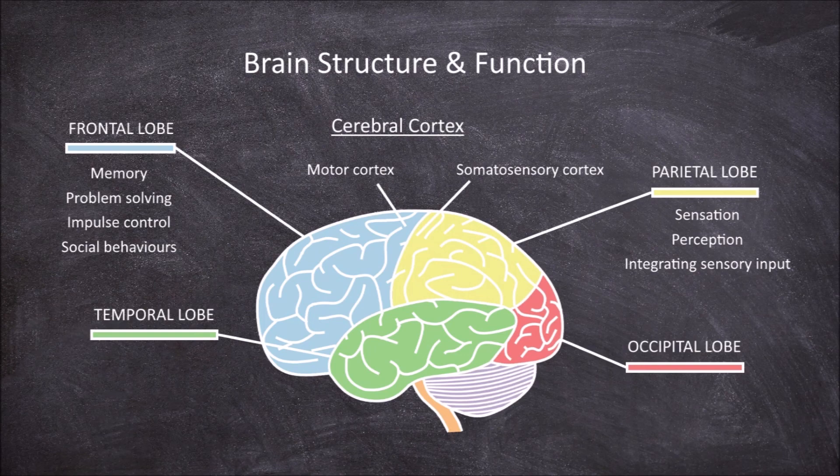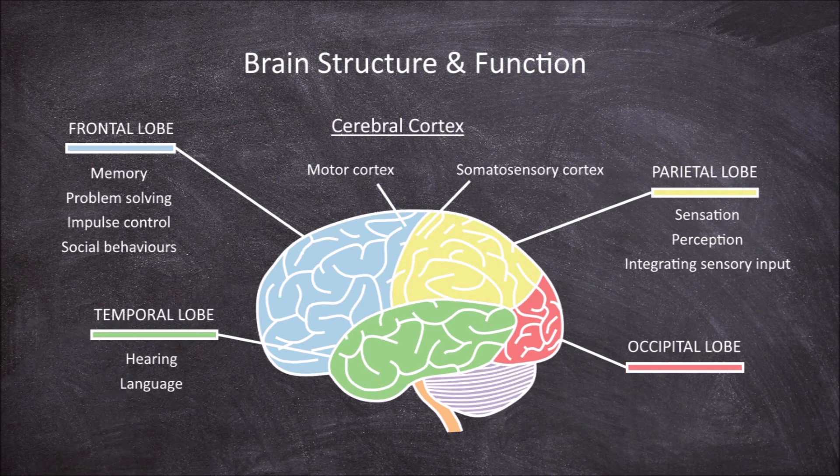The temporal lobes are found on the sides of the brain. The main function of the temporal lobes is in hearing, but also in language, speech, and memory.